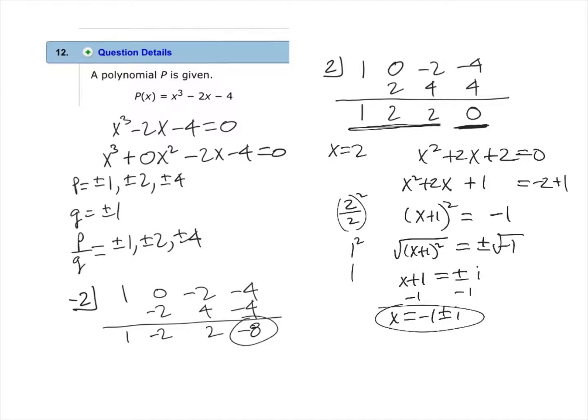Here are our other two roots. So our roots are 2 and negative 1 plus or minus i. But we are to write this in its factored form. So we would do that by writing x minus 2 and then x minus each of these factors.